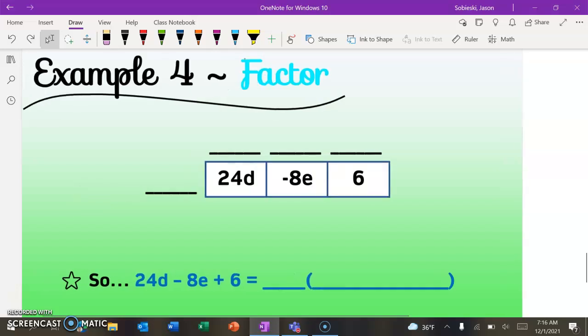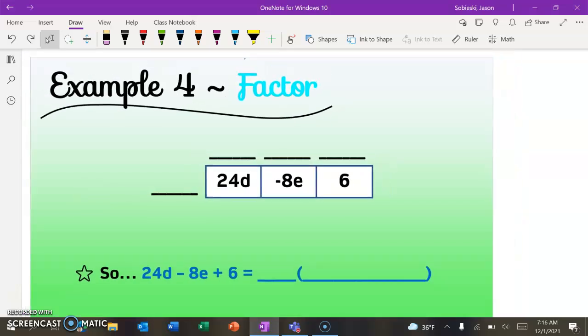All right, so we have a little bit of time left. We're going to have you try that final example on your own. Again, remember that GCF is going to go on this line out front of your rectangle. So think, what is the biggest number that I can factor out of all three terms? And is there a variable that I could factor out? Pause the video, see if you can get your answer, and then we'll check before we wrap things up.